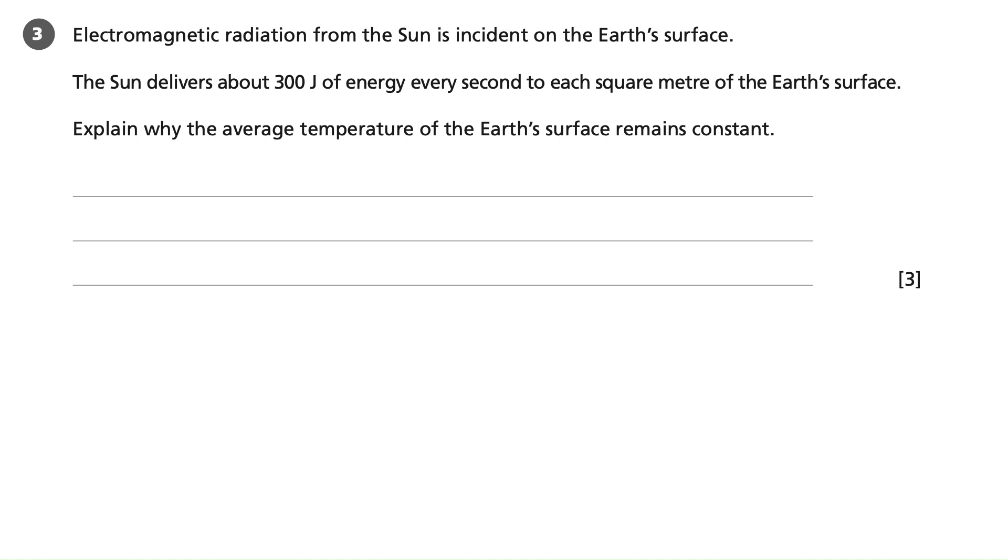Question three. Electromagnetic radiation from the sun is incident on the Earth's surface. The sun delivers about 300 joules of energy every second to each square meter of the Earth's surface. Explain why the average temperature of the Earth's surface remains constant.